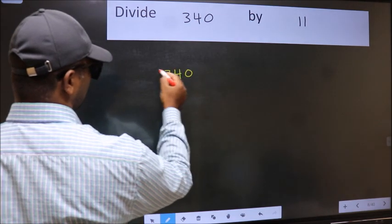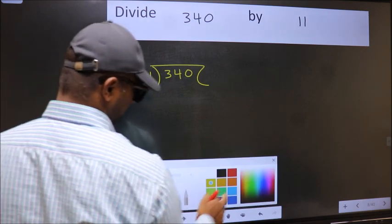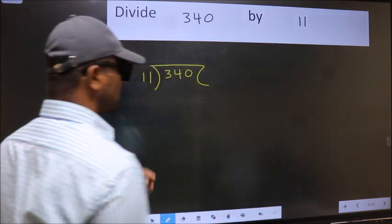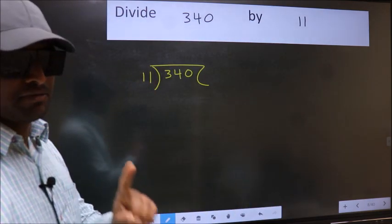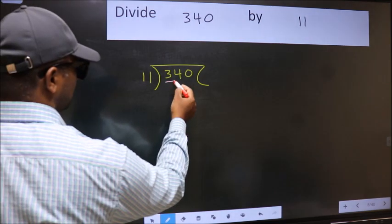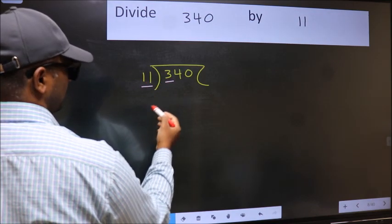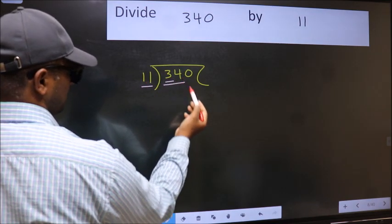340 and 11 here. This is your step 1. Next, here we have 3 and here 11. 3 is smaller than 11, so we should take two numbers: 34.